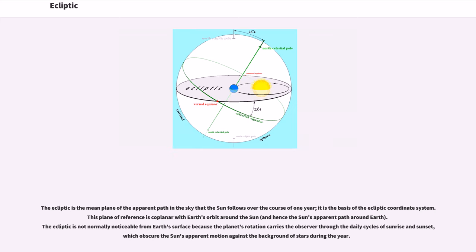Ecliptic. The ecliptic is the mean plane of the apparent path in the sky that the Sun follows over the course of one year. It is the basis of the ecliptic coordinate system. This plane of reference is coplanar with Earth's orbit around the Sun.